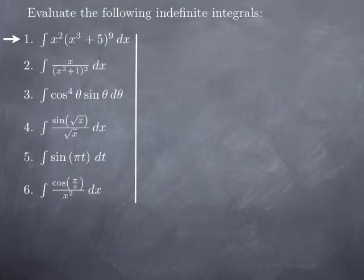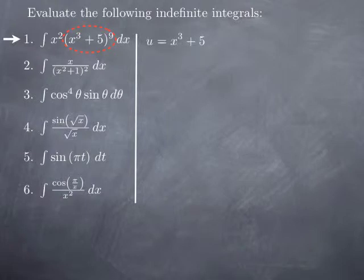Continuing with further examples, we're going to go over this sixth example: the integral of x squared multiplied by x cubed plus 5 to the 9th. Again we look at the composite part. We have x cubed plus 5 that is plugged inside the power 9 function, so we're going to take u as the inside part of this composite — in other words, x cubed plus 5, what is plugged into the power.